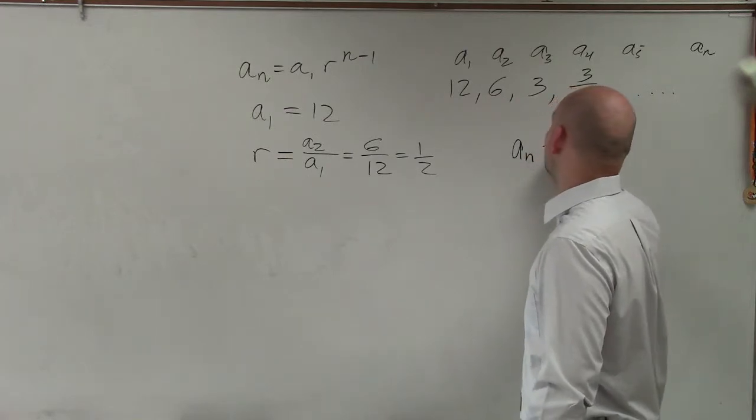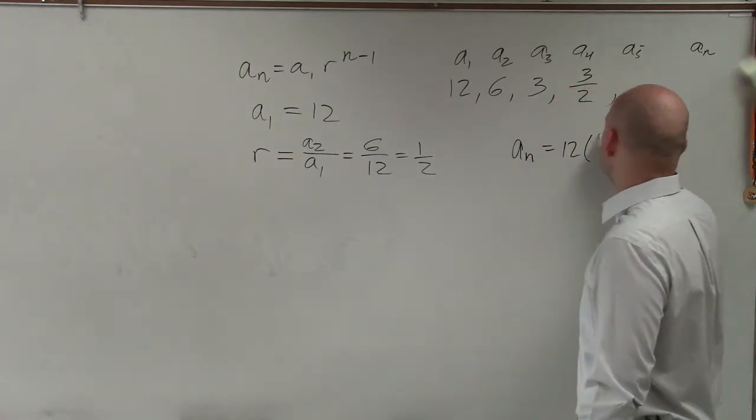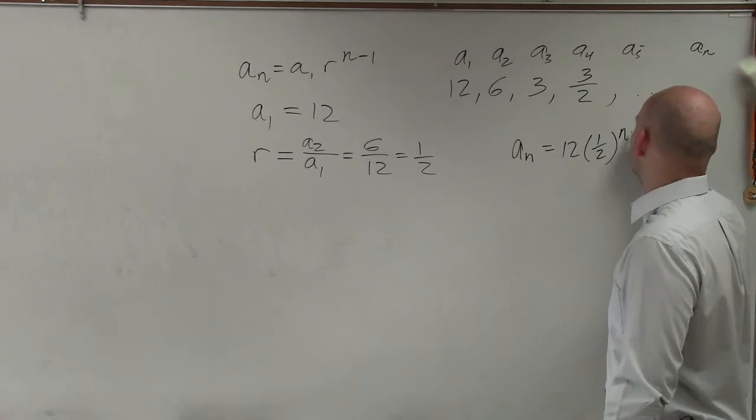So therefore, a sub n equals a sub 1, which is 12, times our ratio, 1 half, raised to the n minus 1.